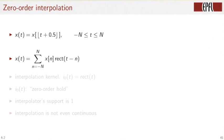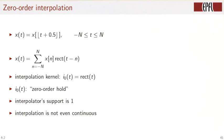The interpolation kernel is this rect function, sometimes called the zero-order hold. The interpolator has a short support of length one. However, the interpolation is not even continuous.